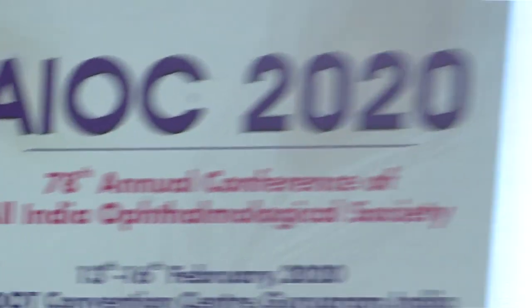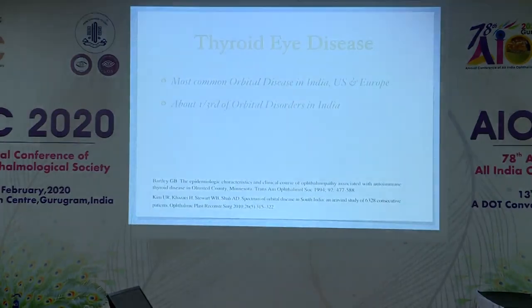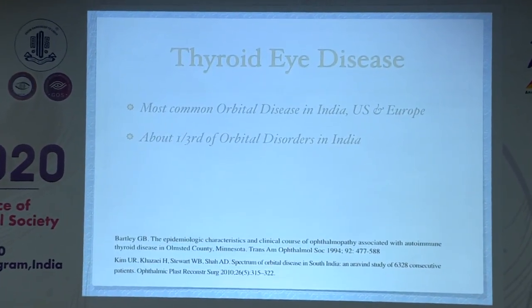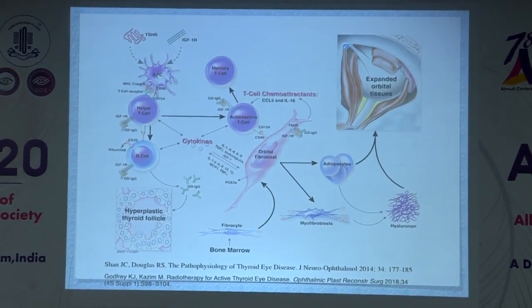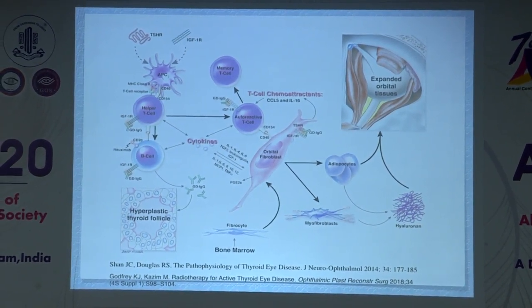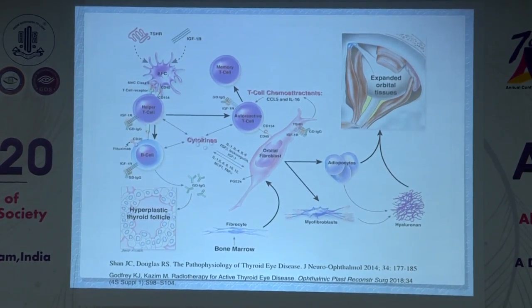Good morning everyone. I'll be speaking on thyroid disease, various clinical presentations, and a brief management outline. Thyroid disease is the most common orbital disease in India, accounting for about one-third of orbital disorders. Recent advances in understanding its pathophysiology involve the orbital fibroblast as the central cell, along with many auto-antigens, auto-antibodies, and the production of various cytokines.